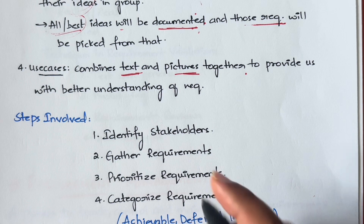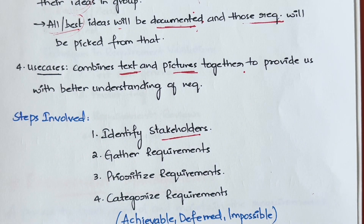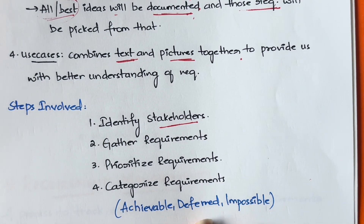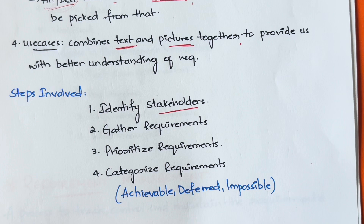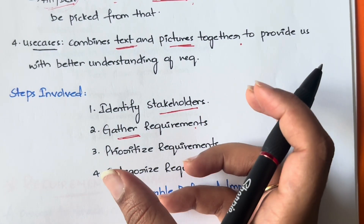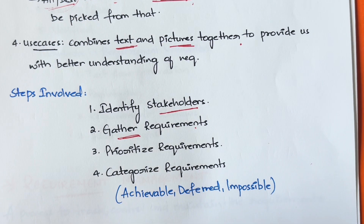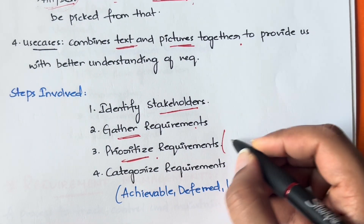Now, what are the steps involved in the requirement elicitation and analysis process? First, you identify the stakeholders - who is involved in this project. Next, you gather the requirements from those stakeholders: you talk to them and collect their requirements.